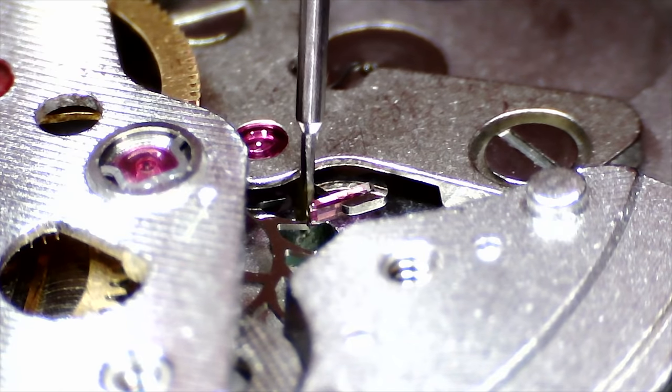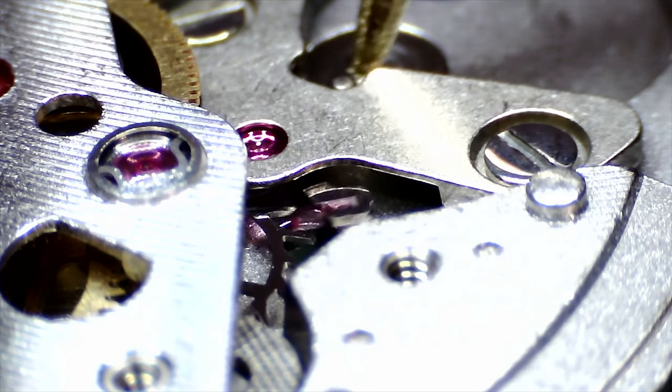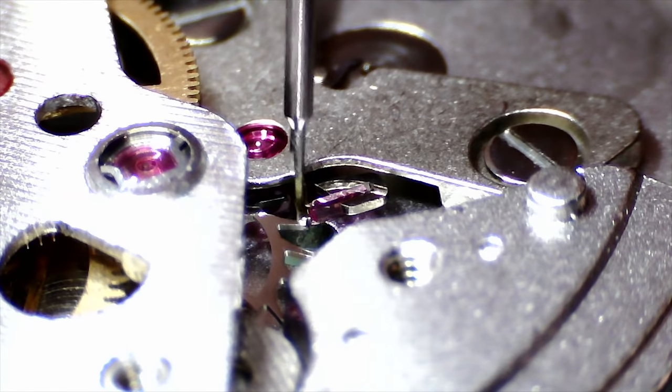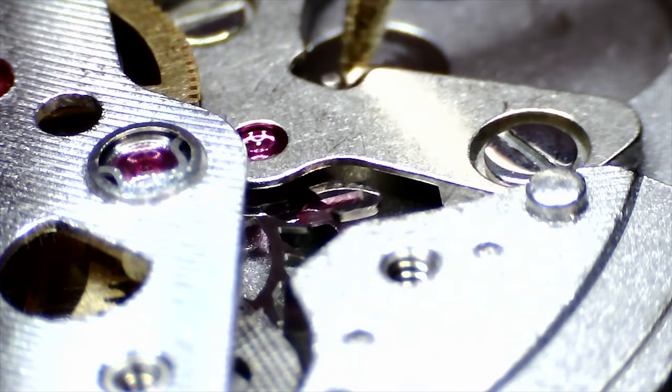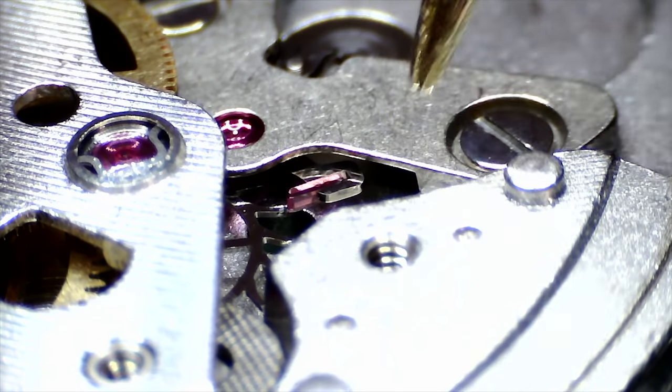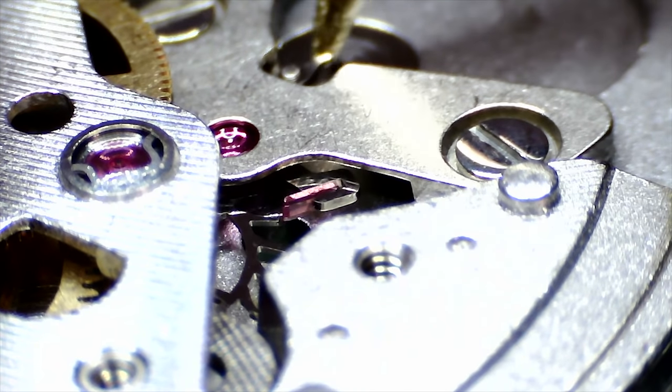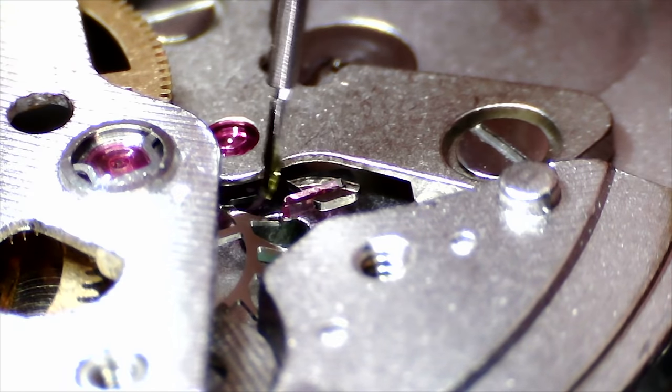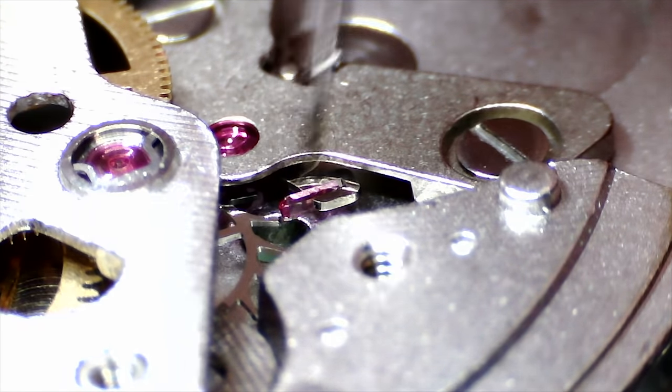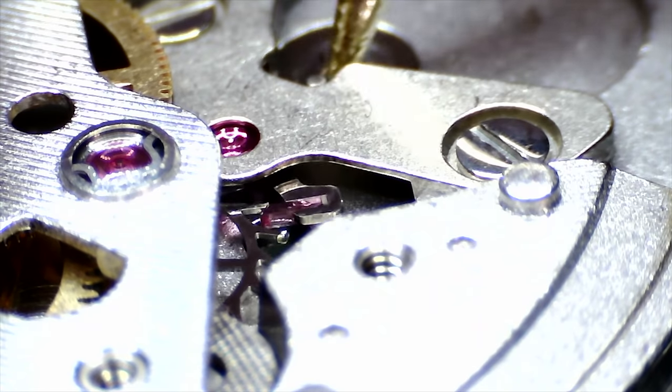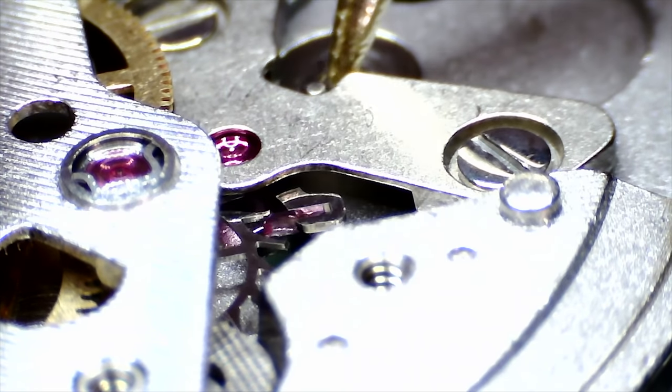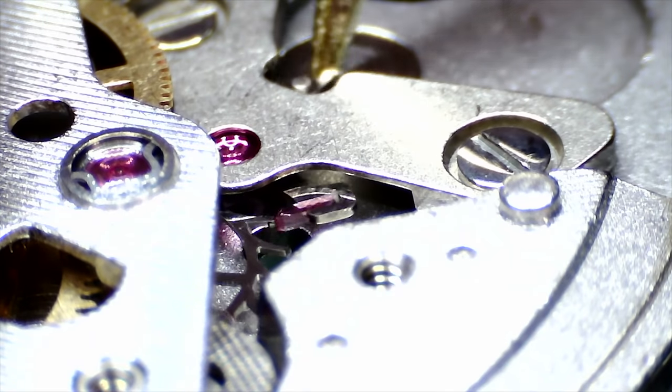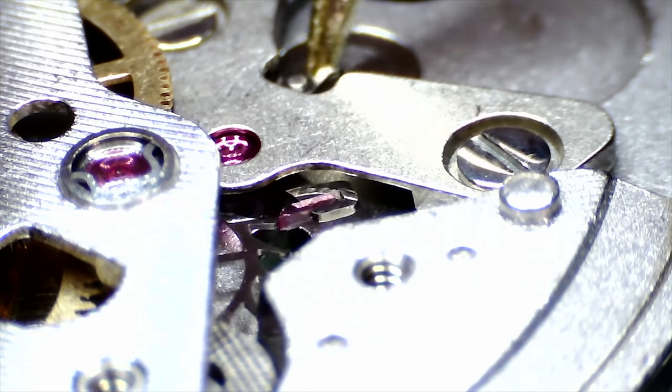Now for greasing the pallet stones, I'm gonna try to show you that we put a little bit of this grease on the exit pallet stone, and then we forward the escape wheel a few times so that we spread this grease onto the different teeth in the escape wheel. And that way the entire escape wheel has a little bit of lubrication on its teeth.